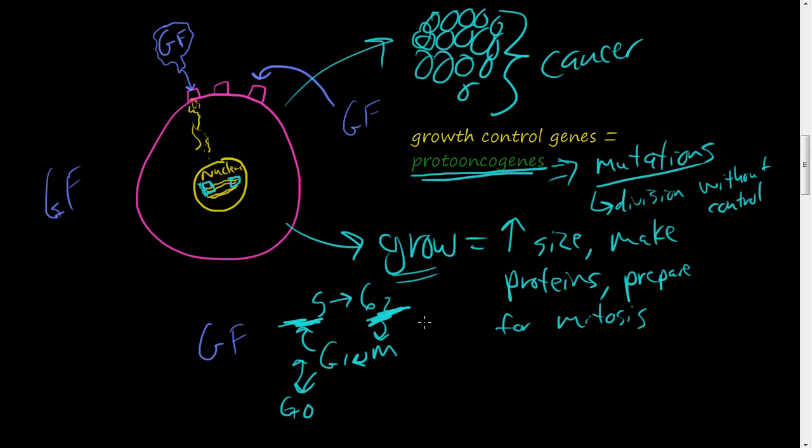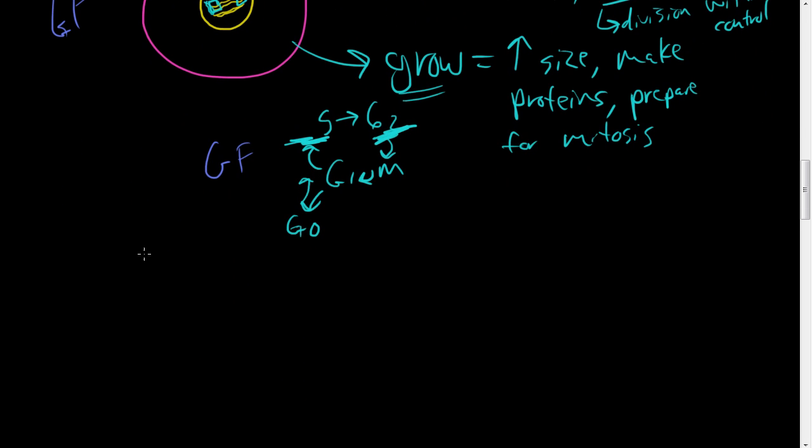It's important for these growth factors to properly stimulate these cells to undergo this process. Who secretes these growth factors? Well, leukocytes do. Once leukocytes come into the damaged area or to take care of a foreign invader, they will secrete growth factor. Also, the cells in the ECM where the extracellular matrix was degraded will also secrete growth factor.